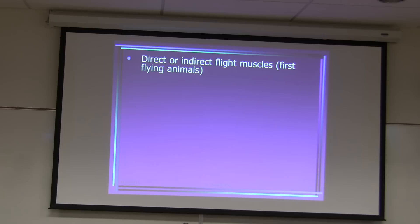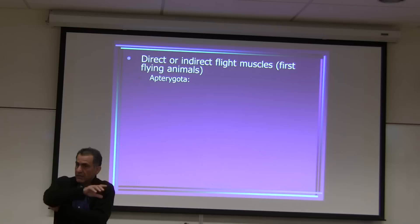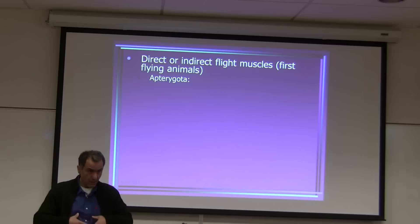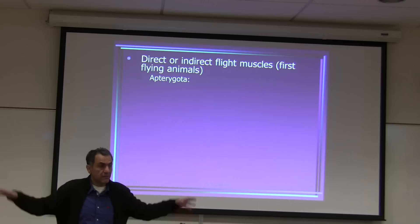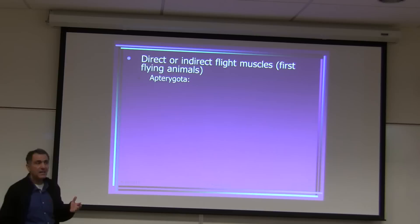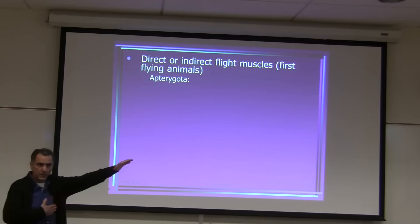Usually six legs. Direct flight muscles attach directly from inside the body to the wings — this is more primitive. Indirect flight muscles attach to the sternum and tergum; when those muscles contract, the sternum and tergum move, causing the wings to move up and down. Evolutionarily, indirect flight muscles are considered more advanced and evolved later.